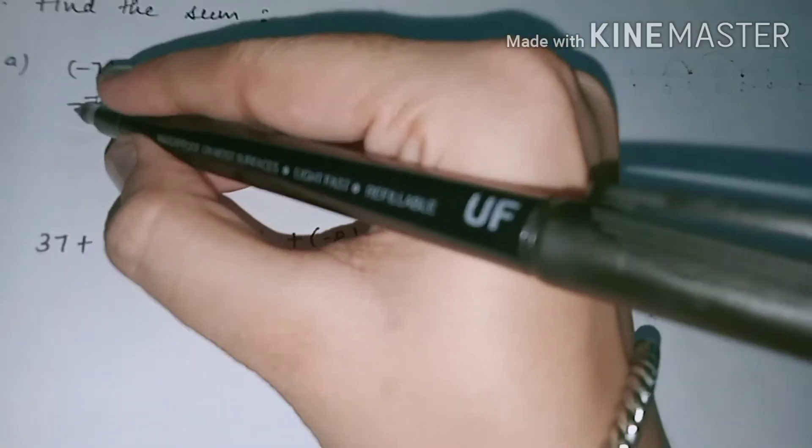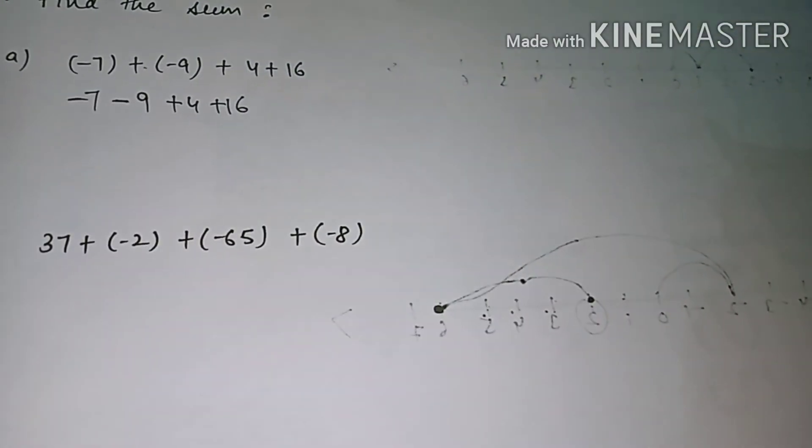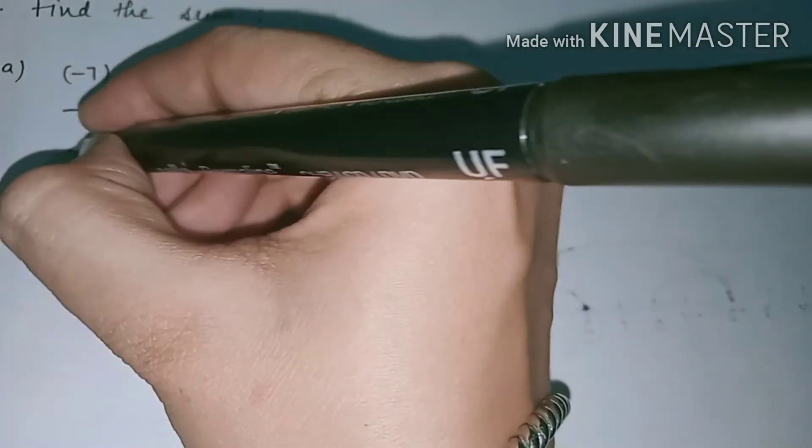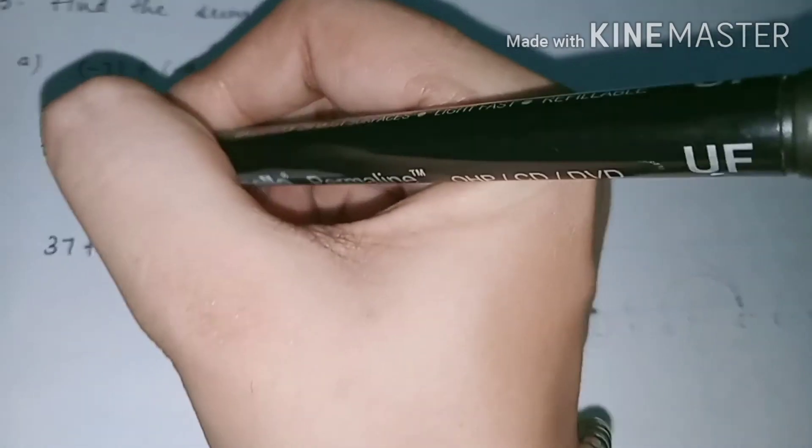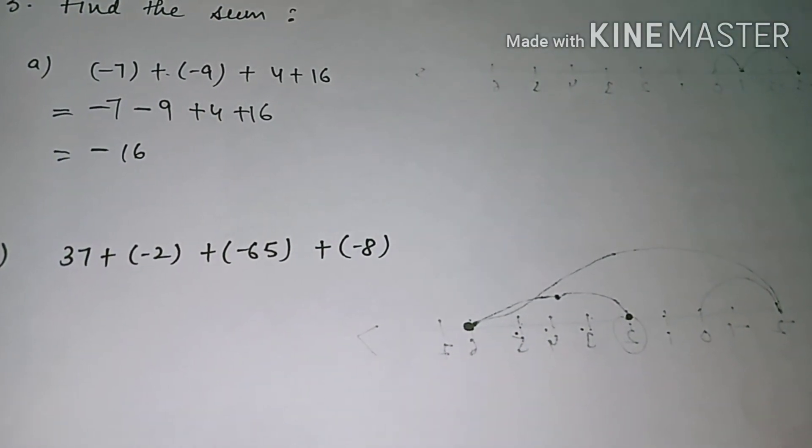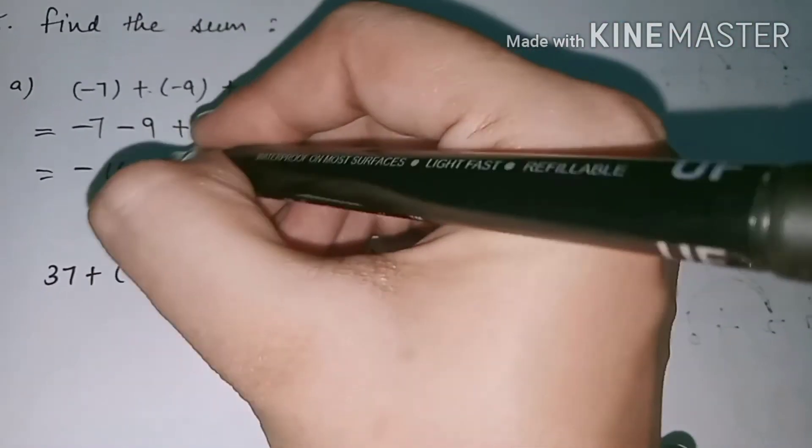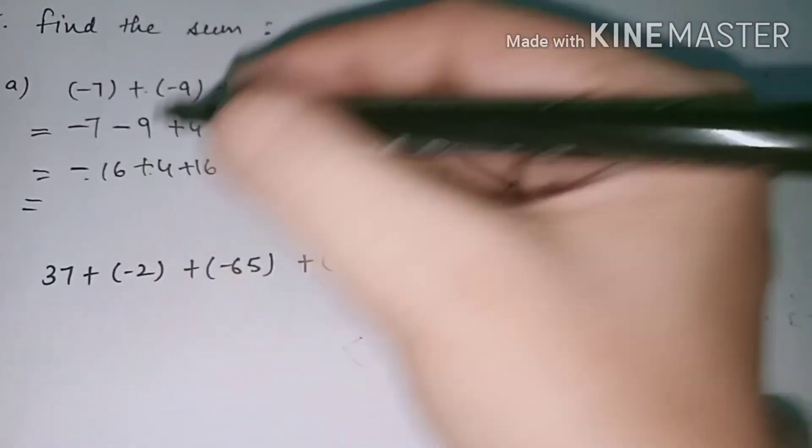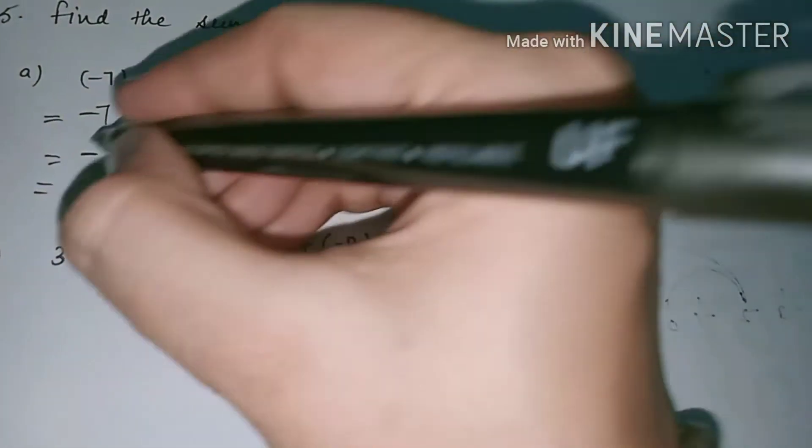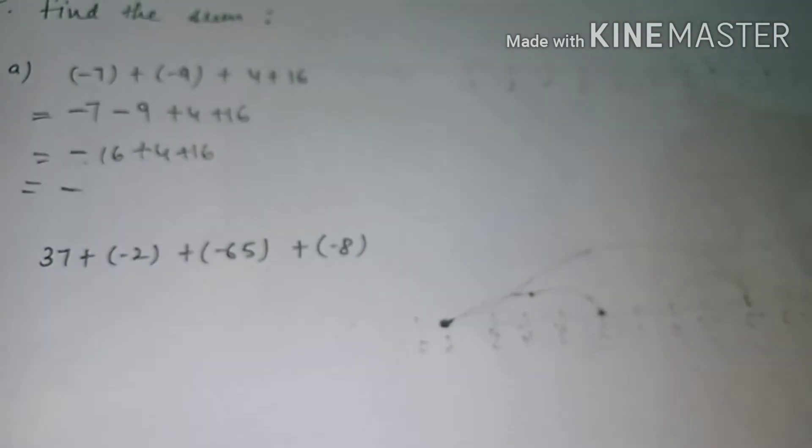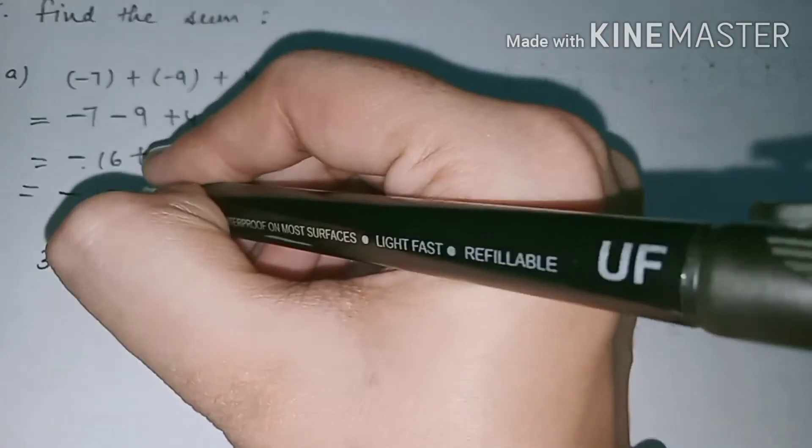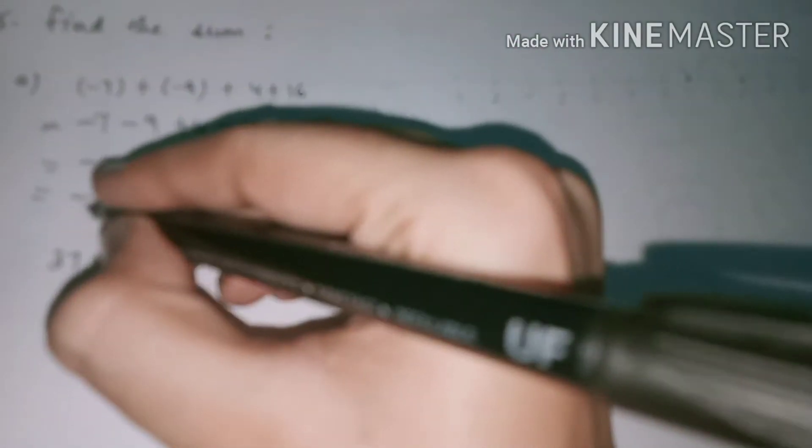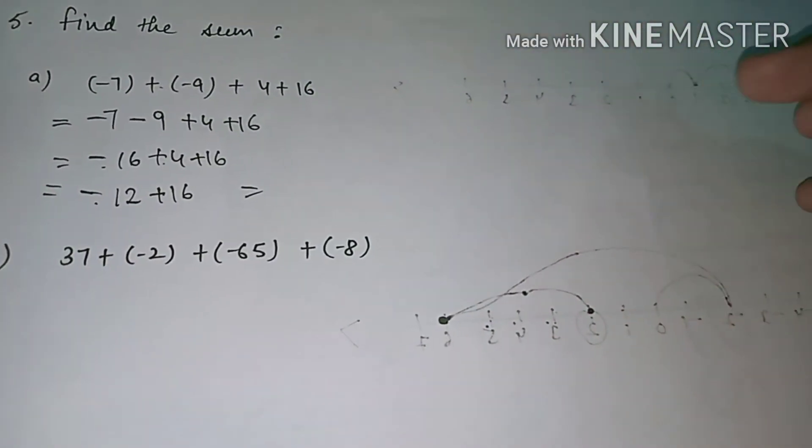Now see, first minus is here, here also minus is here. Minus minus, what do they become? Plus. But sign of whom remains? Minus remains. So minus 16, so plus, minus minus. But sign of whom remains? Minus. Plus 4, plus 16, then equal sign. Now plus minus, what do they become? Minus. But with the bigger one, whose sign? Minus. So we will give minus, minus 4, 16 minus 4 is gone, 12 plus 16.